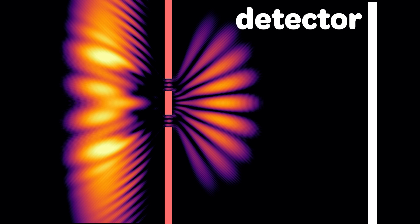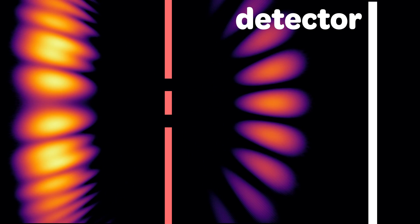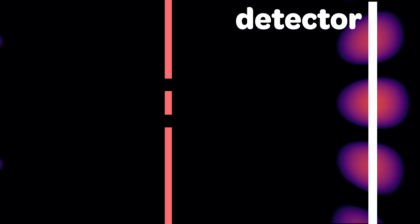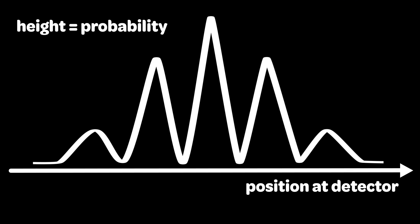I placed a detector here and sum all the electron wave passing through this line to detect the electron wave. I'll show you what I got at the detector. I got this line of graph. The higher the graph is at the position, the more probability to detect the electron at the position.